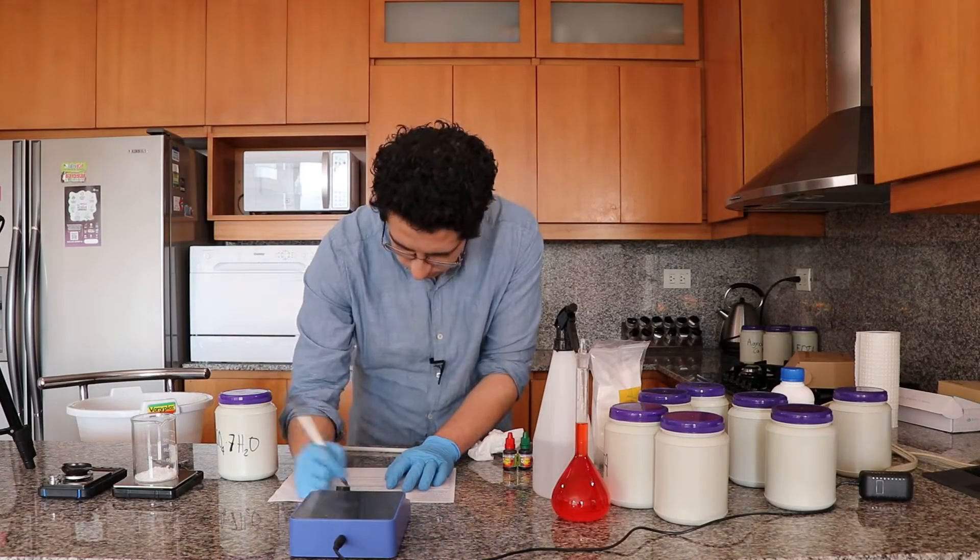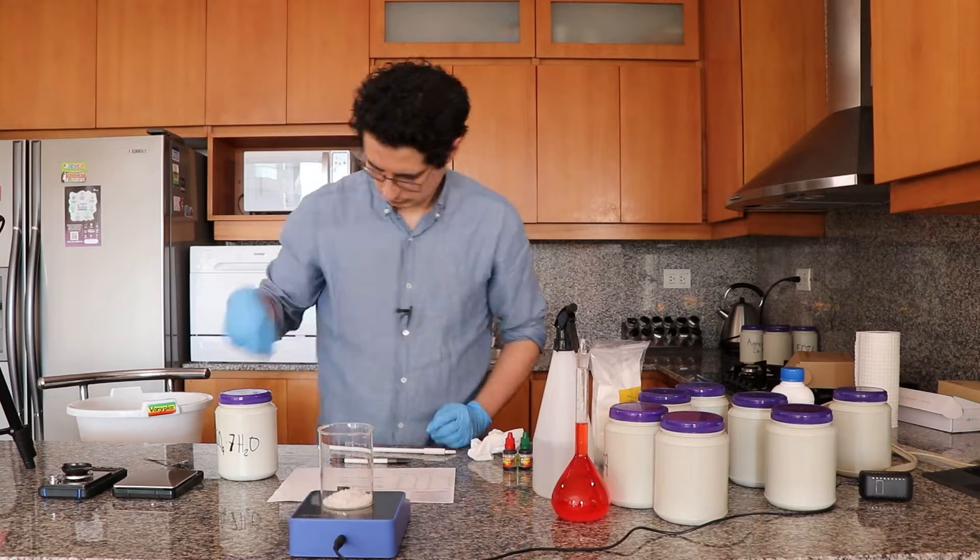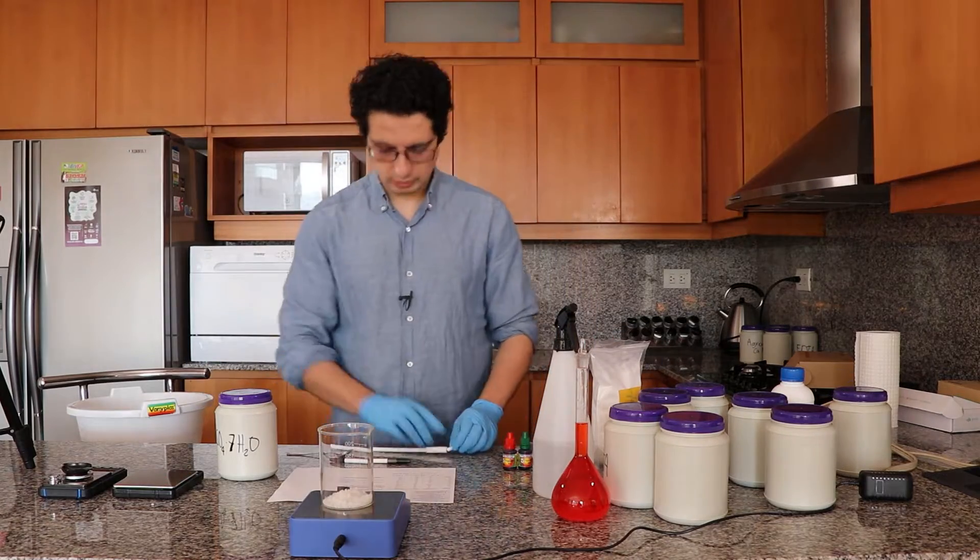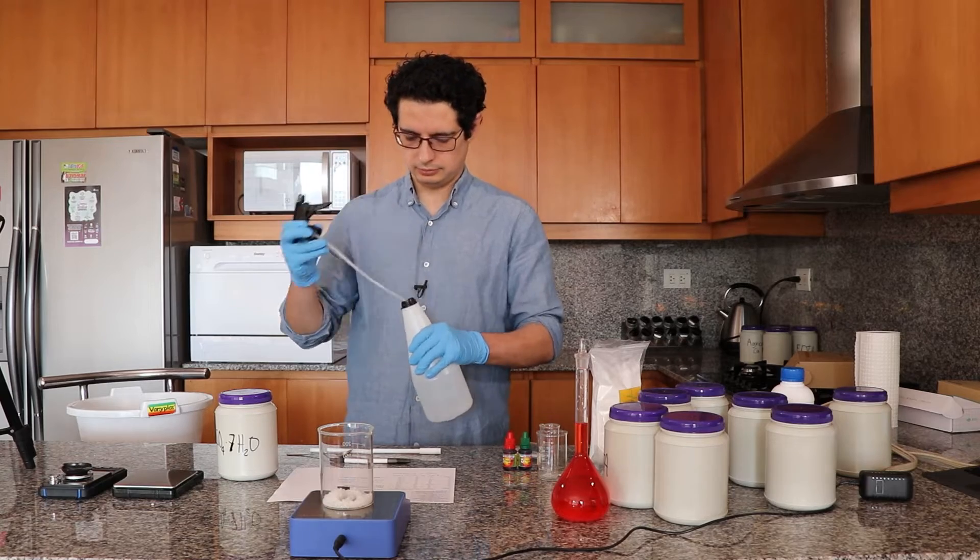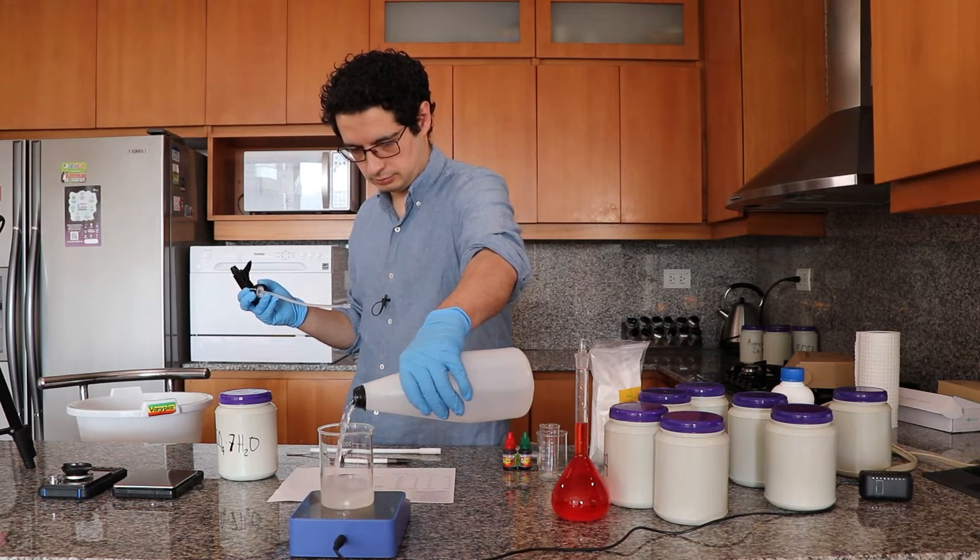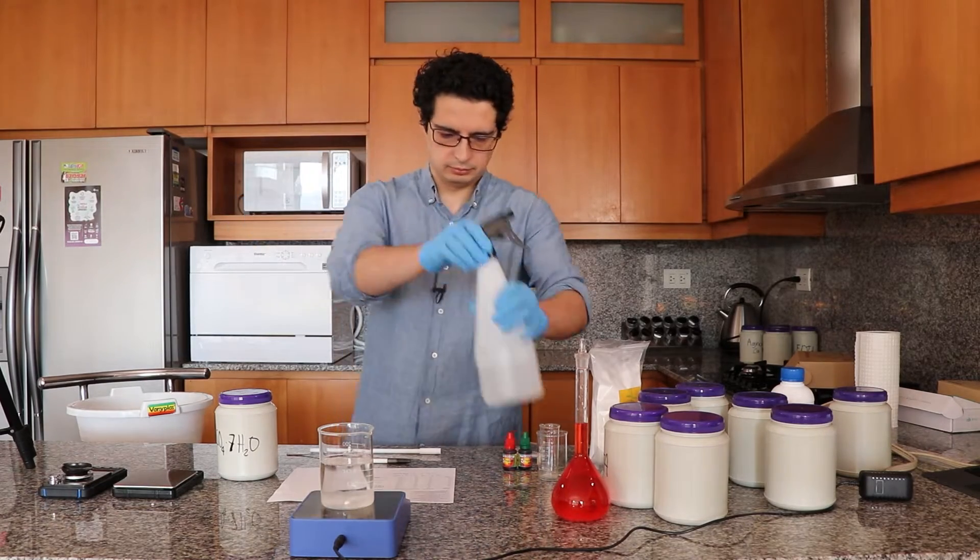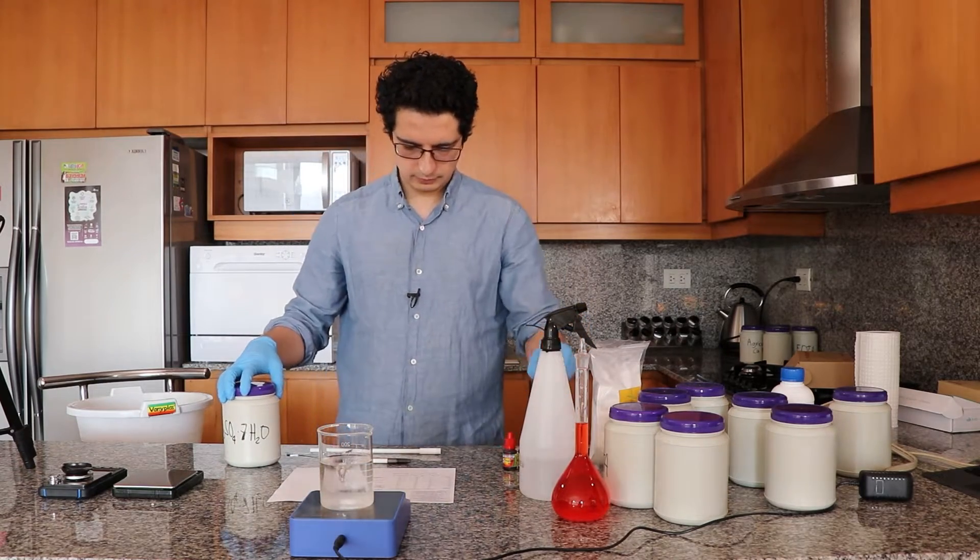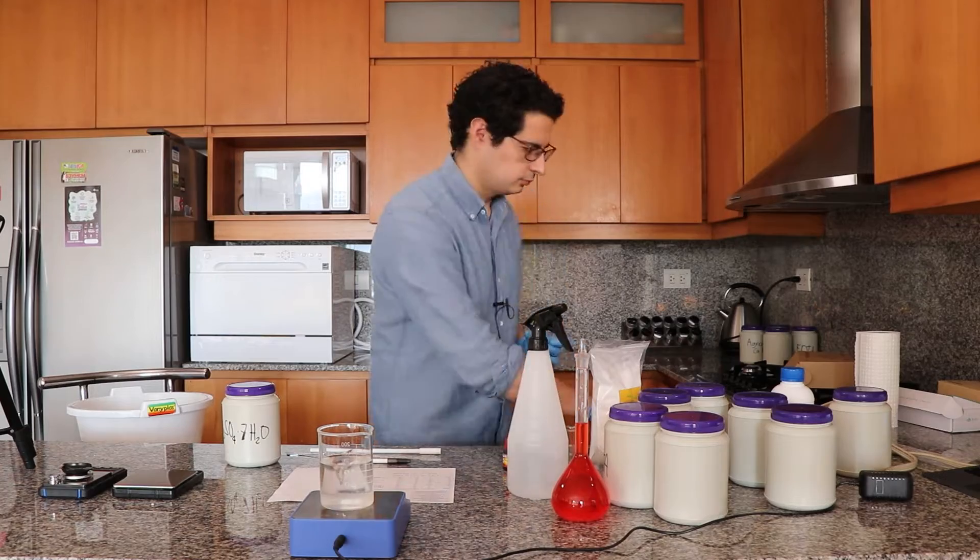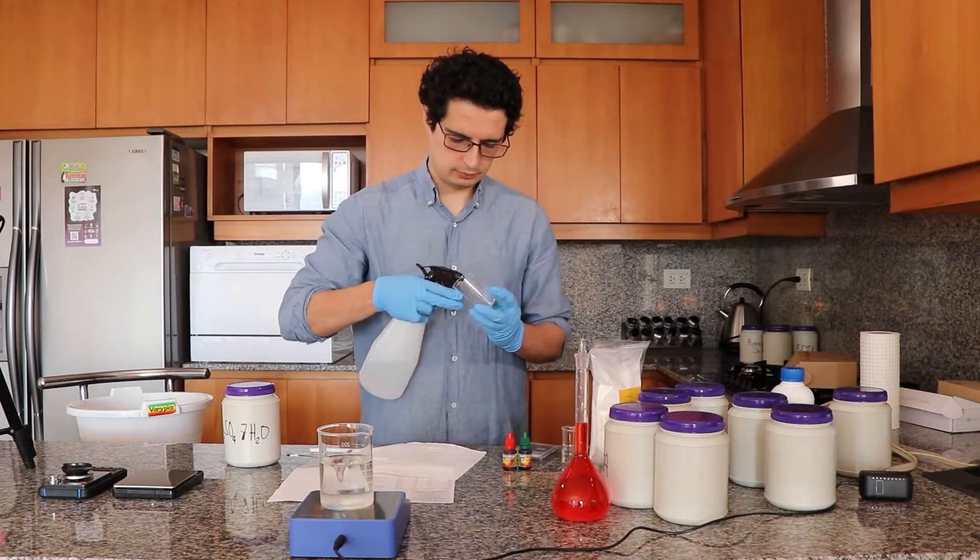Now again I am going to add a magnetic stir so that I can start dissolving the salts while I weigh and add the rest. So this time I'm adding a bit more volume; I added around 150 milliliters to ensure I have enough volume to fully dissolve all the salts before I take to the final volume in the volumetric flask.